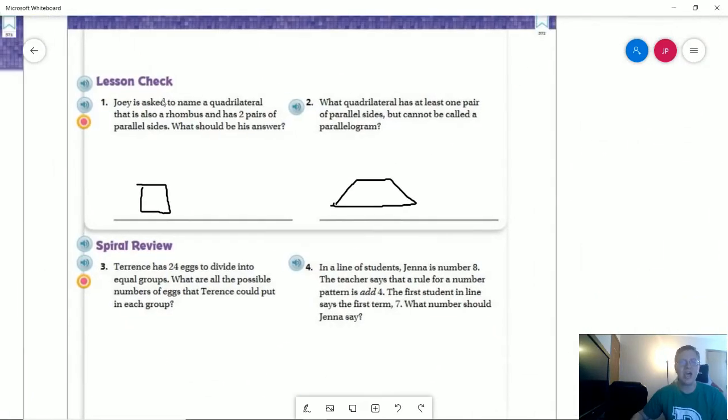Number one on the back, Joey is asked to name a quadrilateral that is also a rhombus. So our shape for a rhombus is going to be like a square, but it's going to be tilted sideways. It has four lengths of the same side, but it doesn't have 90 degree angles typically. The rhombus has two pairs of parallel sides, so we could have a square for that.